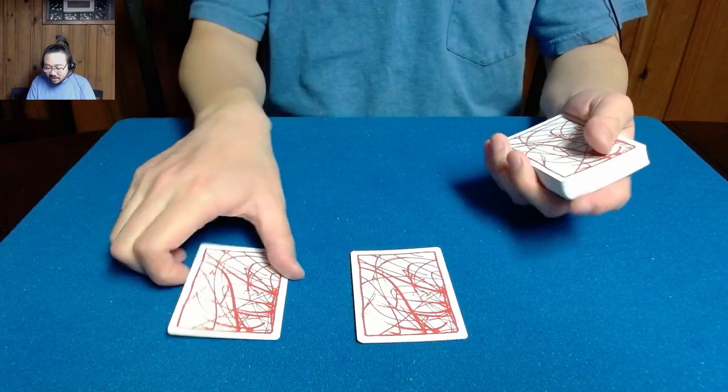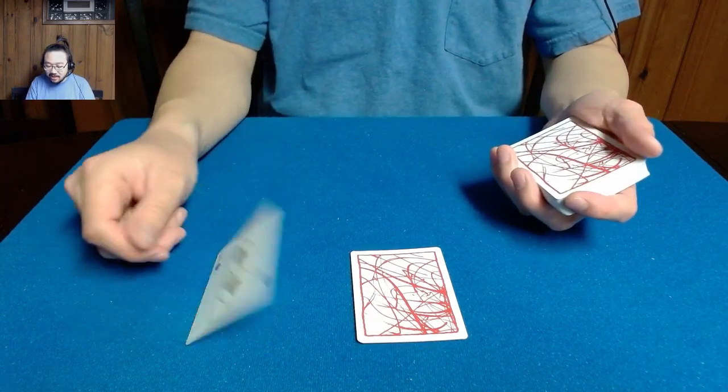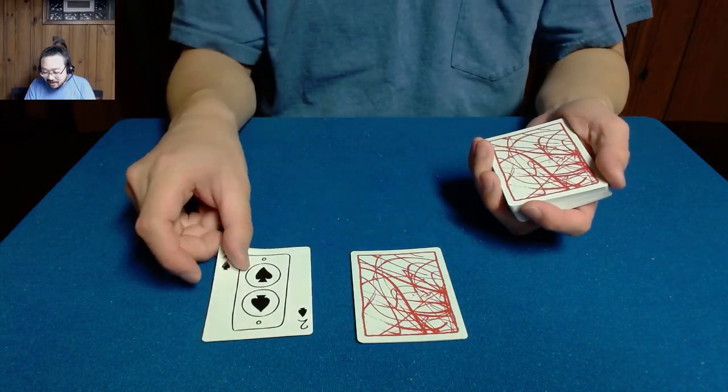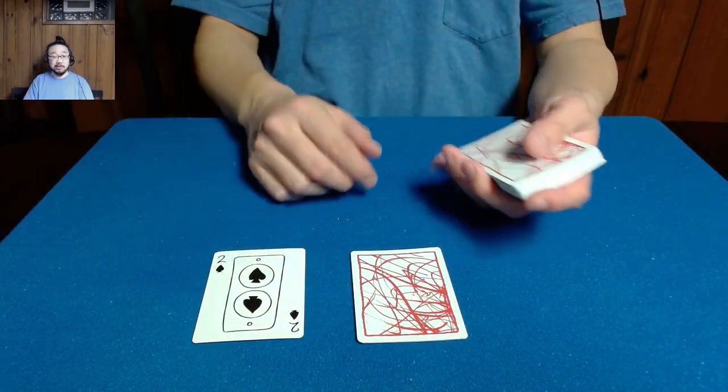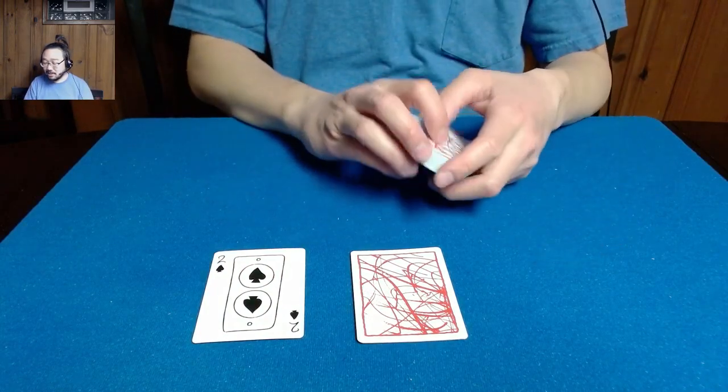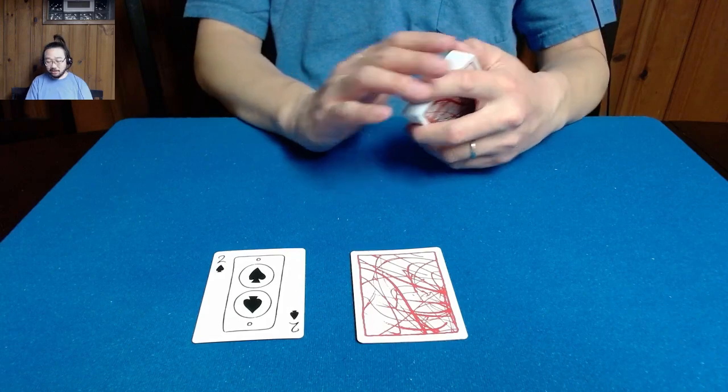But anyway, I've set aside some cards already. This one is the two of spades. And if you take a look, it looks like a couple of elevator buttons. Why have I set these aside? Well, because in magic, there is a common plot in card magic called elevator tricks. And so that's what we're going to be doing today.